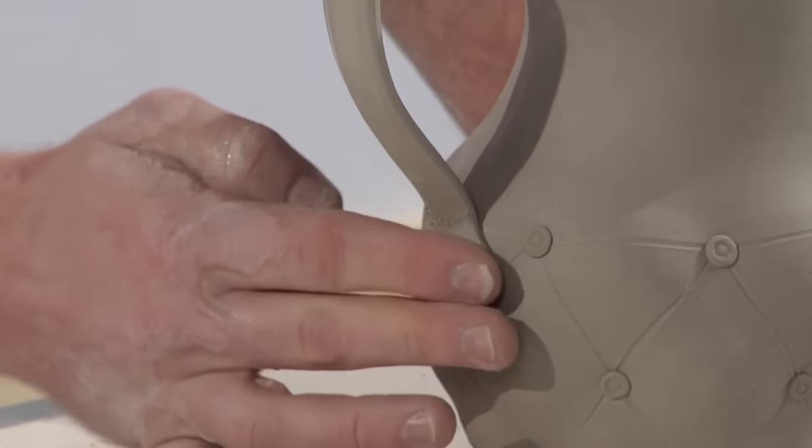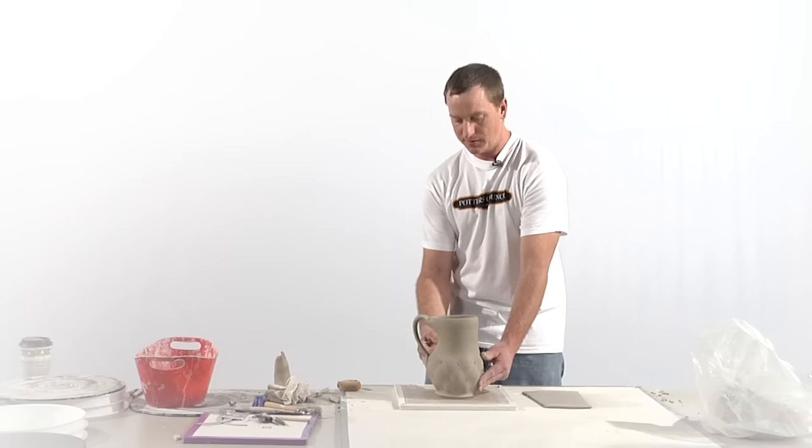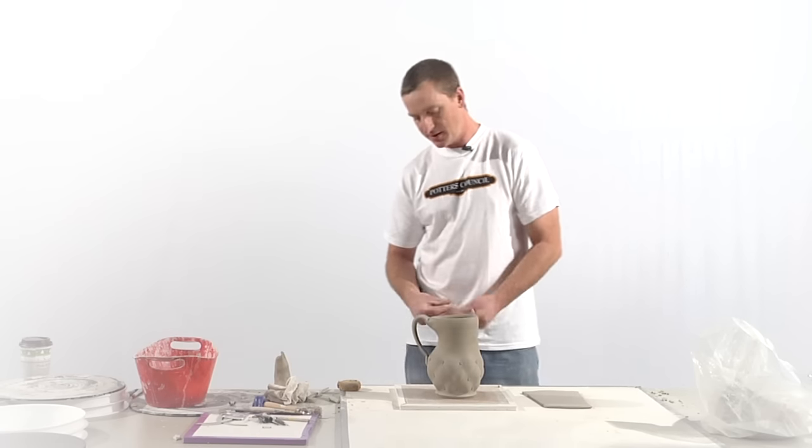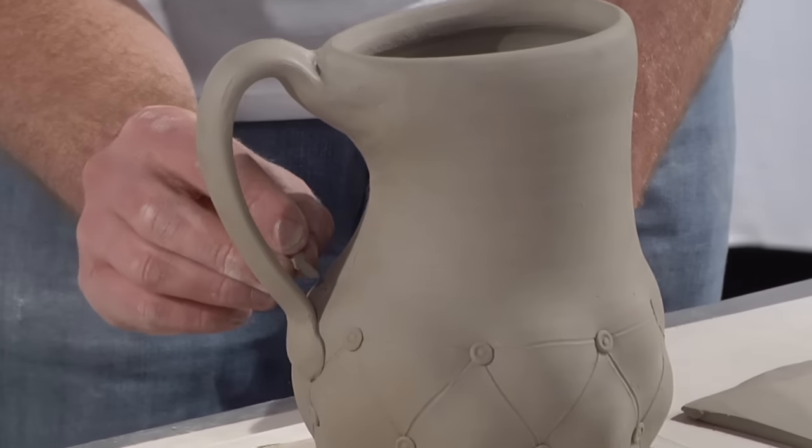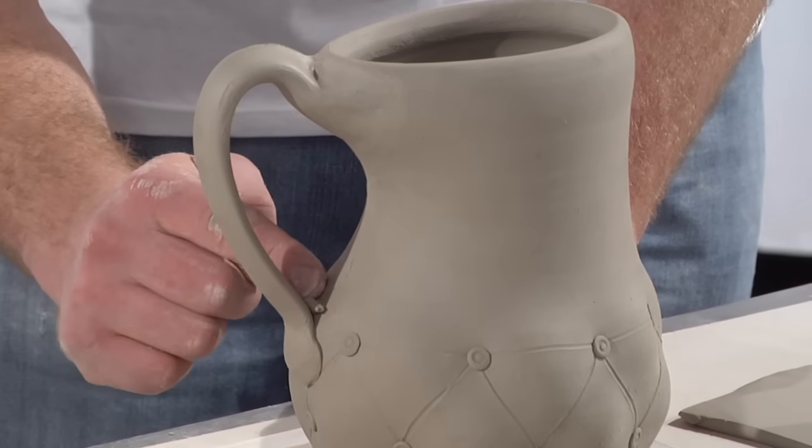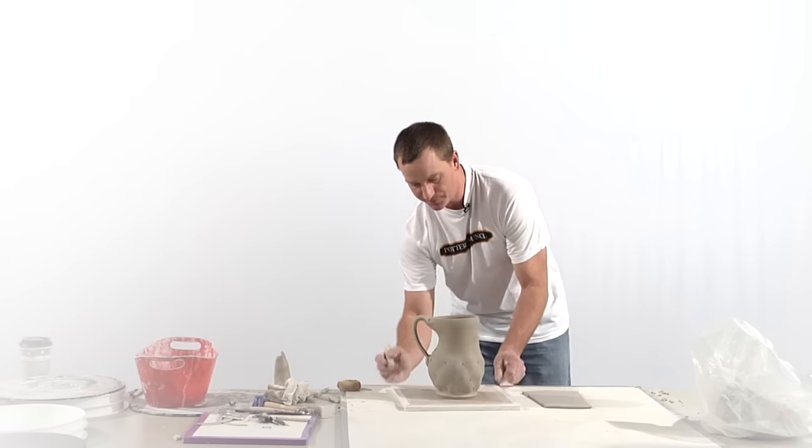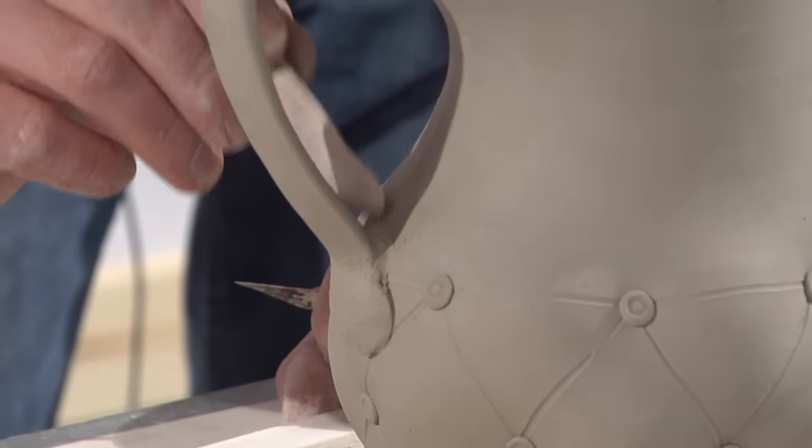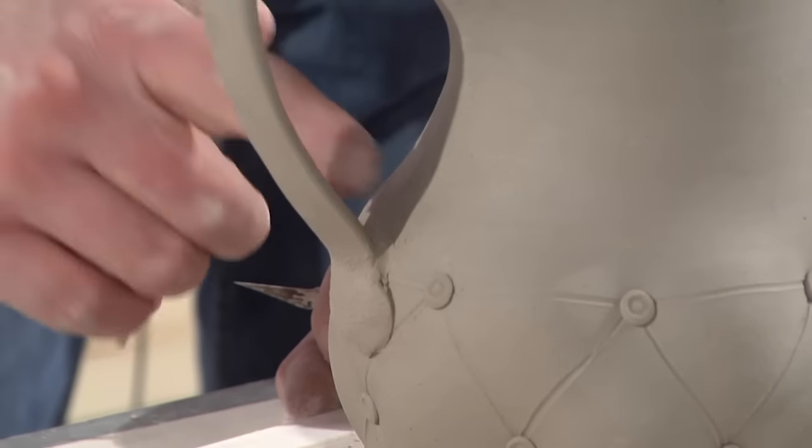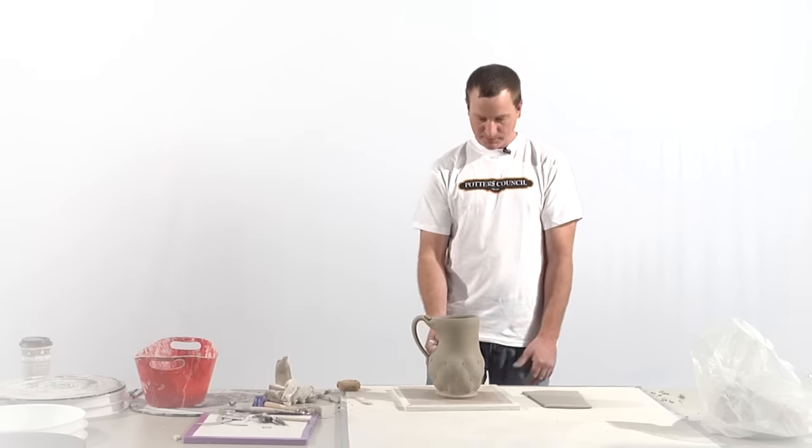So the final part of the handle on this piece, once it's stiffened up just a little bit, is to take a small coil, roll it up, and put it into this little negative space here. This helps reinforce the handle connection and it makes it seem as if there's a little more of a flow from the bottom of the handle into the piece.